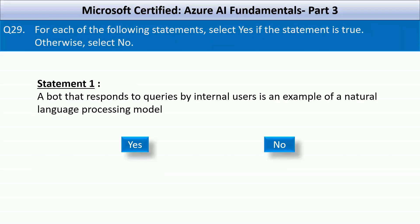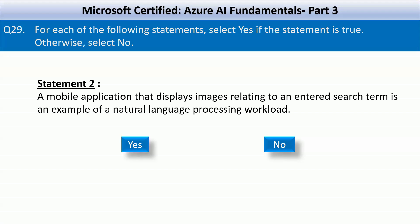Question number 29: For each of the following statements, select yes if the statement is true, otherwise select no. The first statement is: a bot that responds to queries by internal users is an example of a natural language processing model. This is a correct statement — NLP enables the bot to process text input, extract intent, and provide relevant answers. The second statement is: a mobile application that displays images relating to an entered search term is an example of a natural language processing workload. This is an incorrect statement.